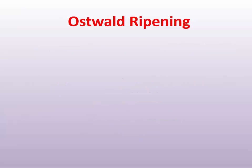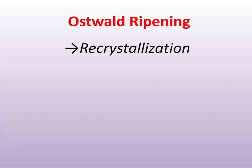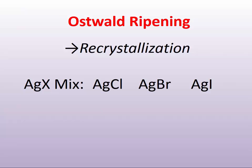What also happens with time is that after the grains start ripening, recrystallization occurs. A silver halide emulsion — particularly the more advanced ones later in the 20th century — was not just one type. They were actually a mix of all three halides: chlorine, bromine, and iodine. Towards the later days, they were almost predominantly bromide with a little bit of iodine.